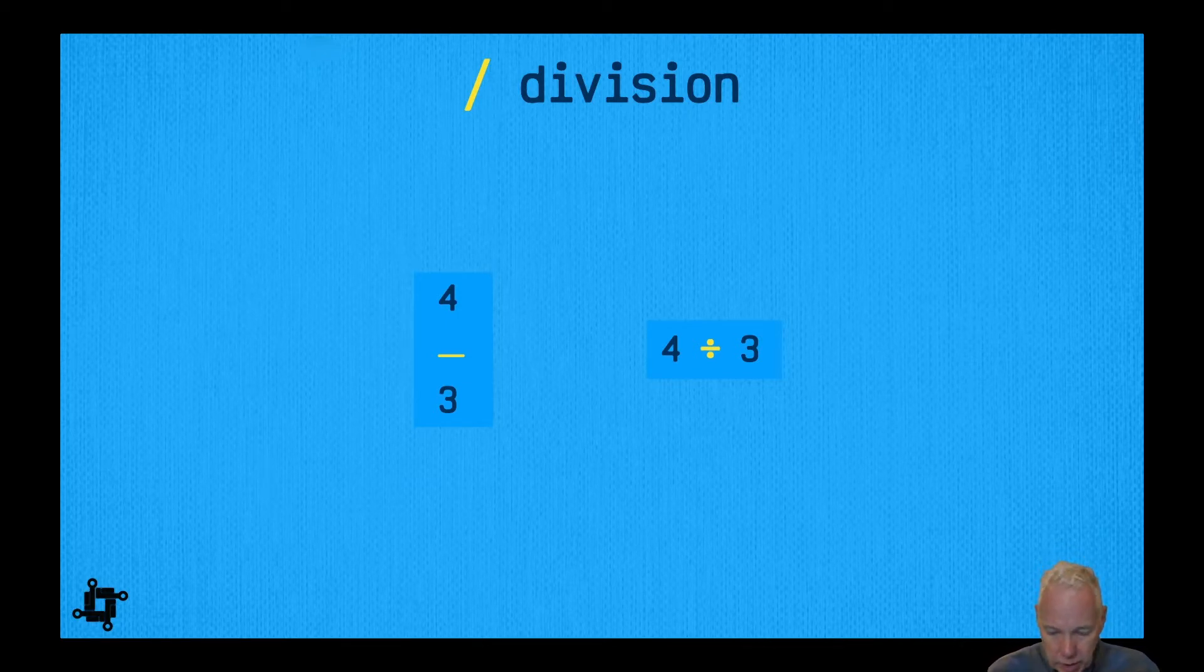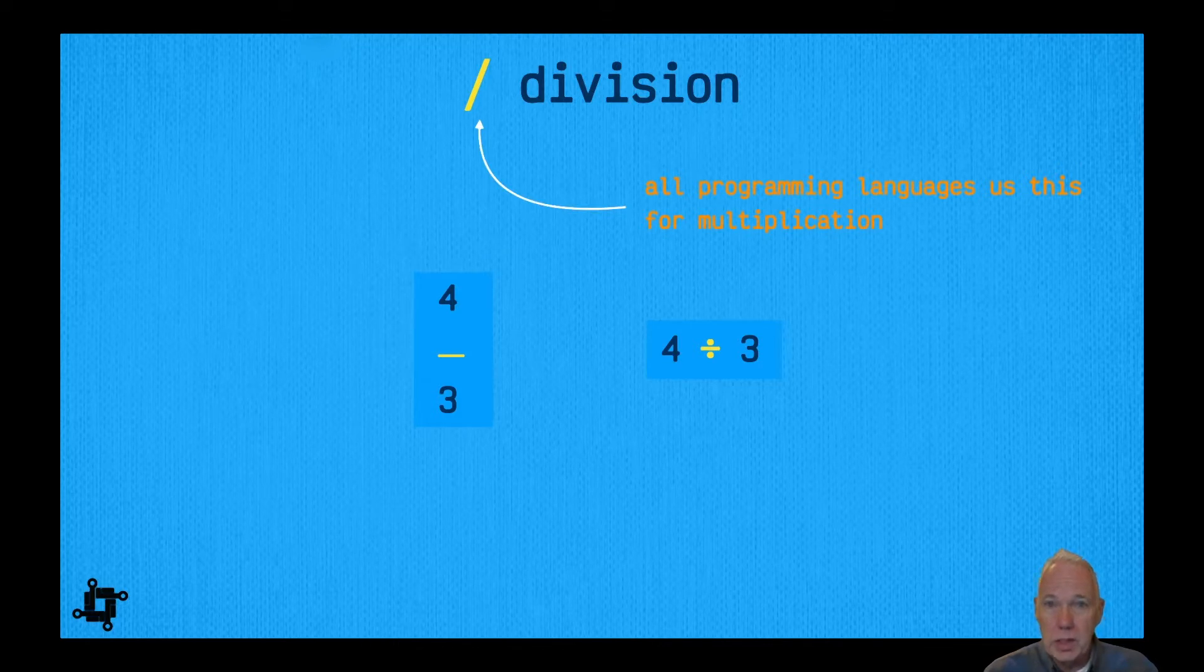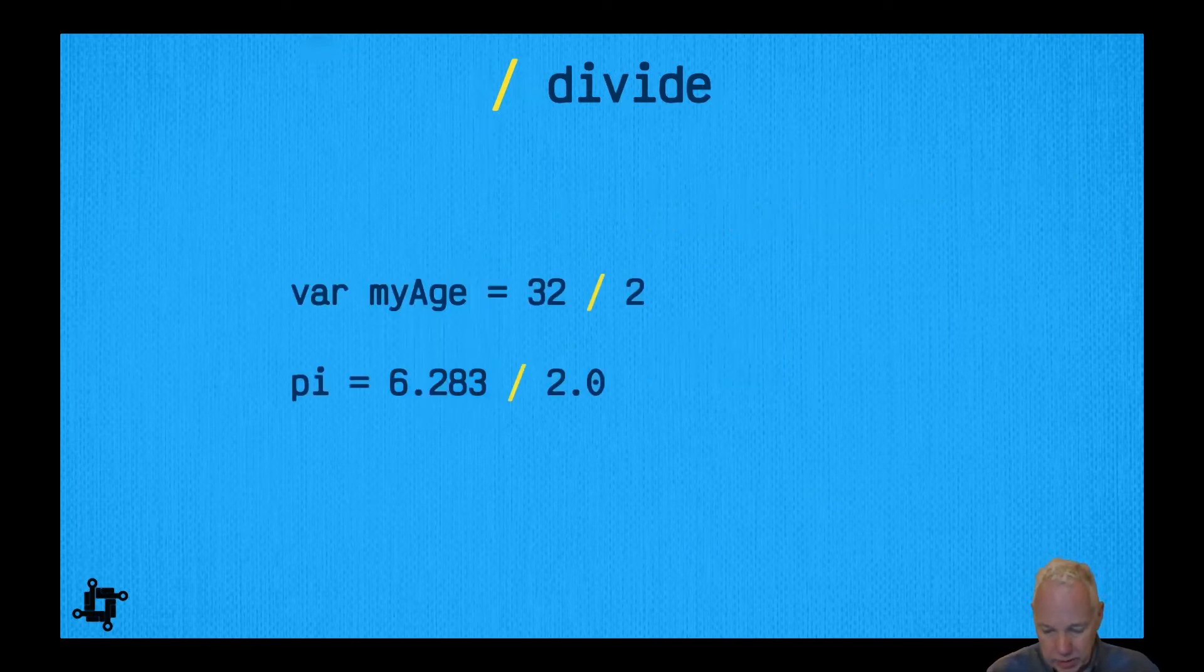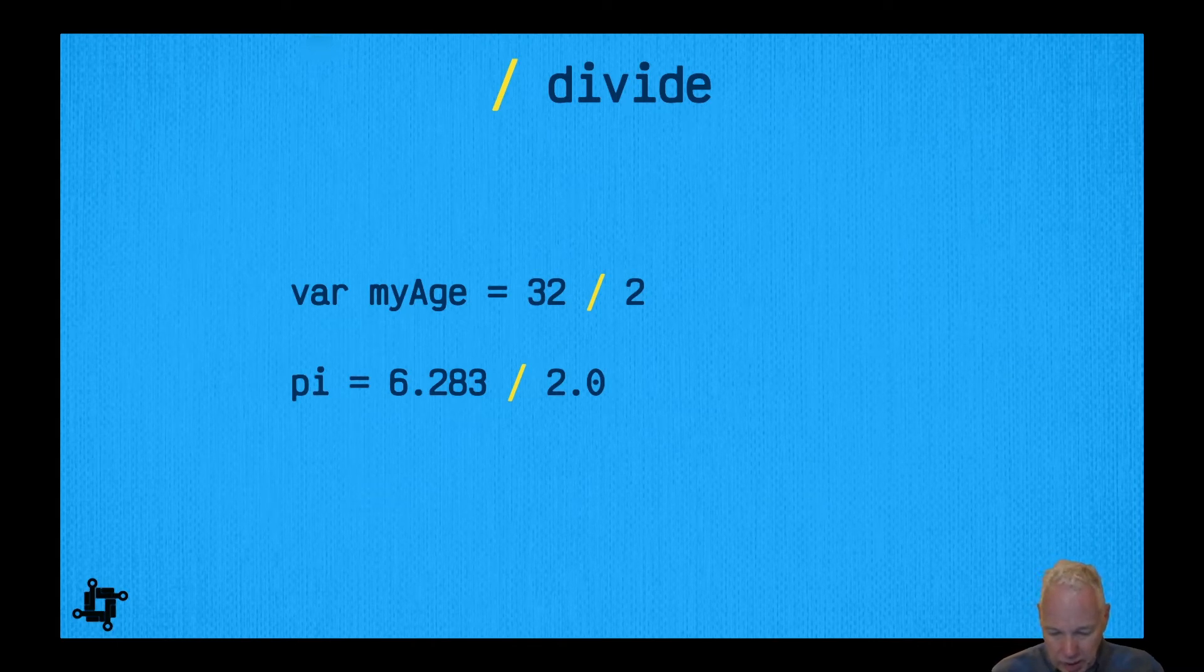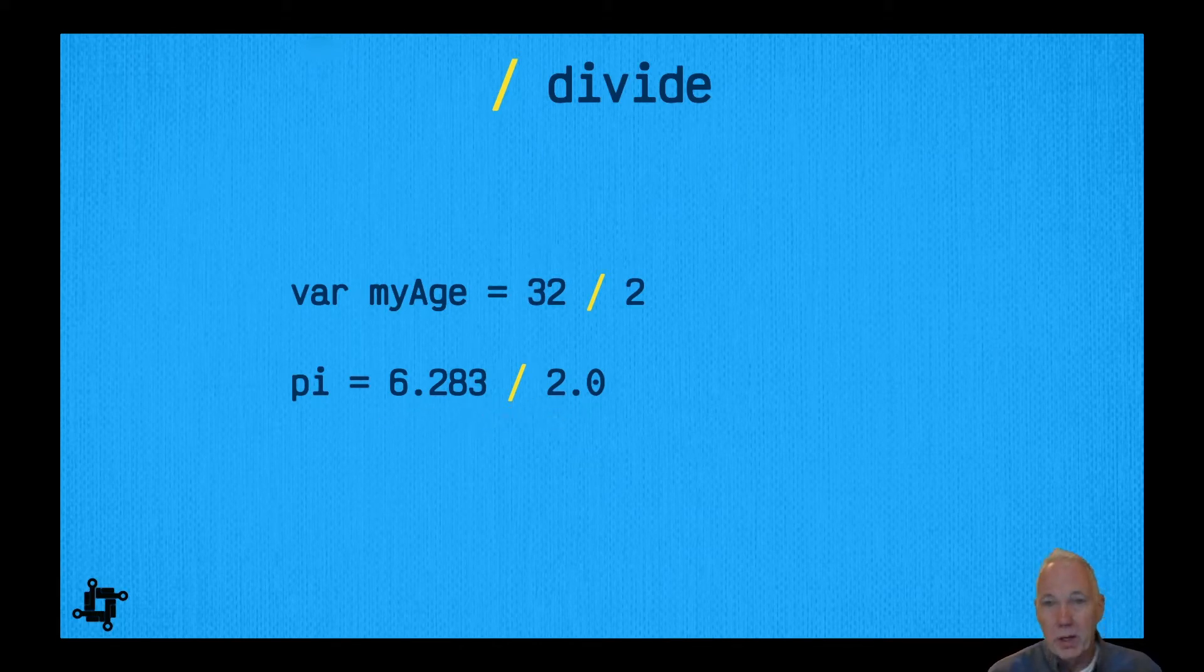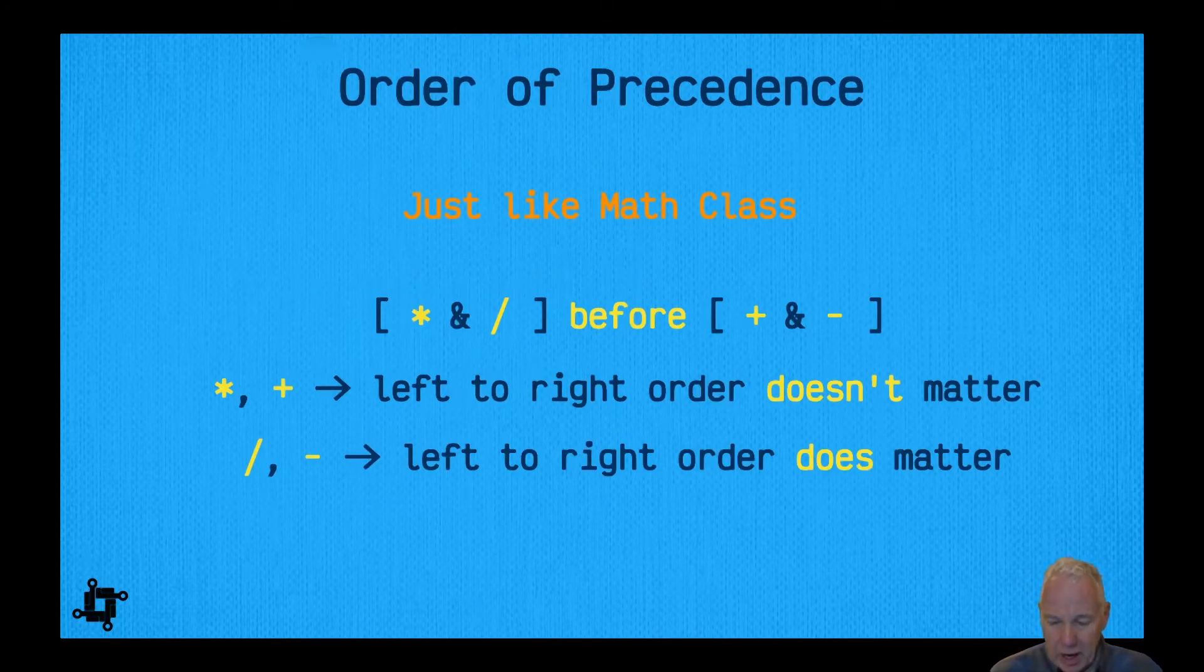We won't use either of those. We are going to use the slash here as the way to represent division in Swift, and this is true of most all other programming languages. For example, if we have age and we have 32 / 2, that's 32 divided by 2, which gives us a value of 16. Or if we took this value 6.283 divided by 2, we would end up again with pi. So that's the division operator.